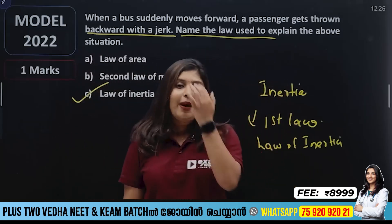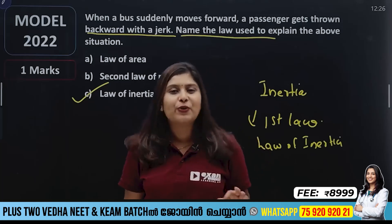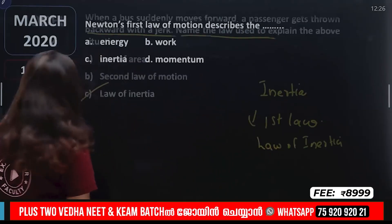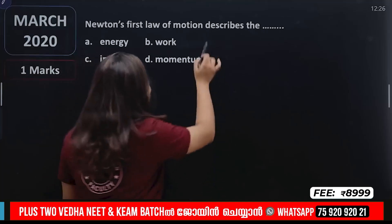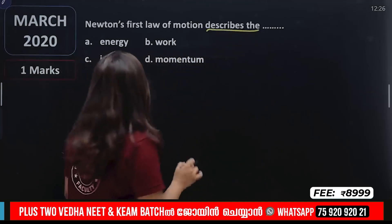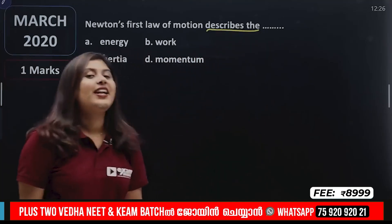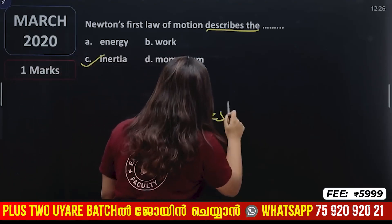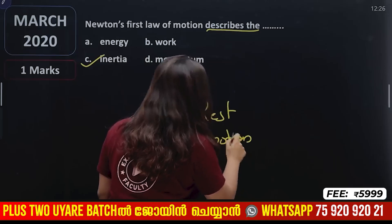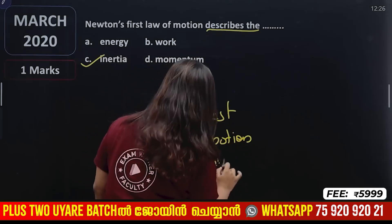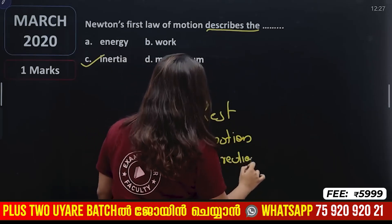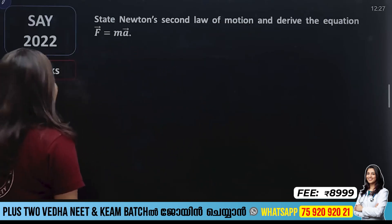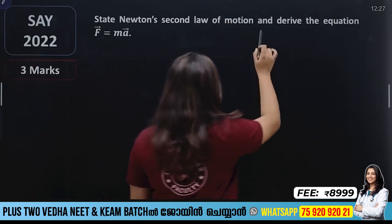Now let's describe Newton's First Law of Motion. It involves inertia of rest and inertia of direction. Newton's Second Law of Motion states and we need to derive the equation F equals ma.